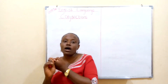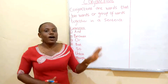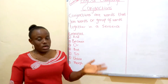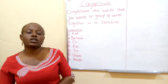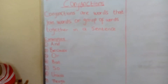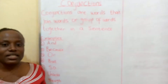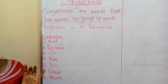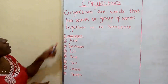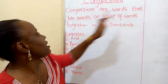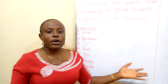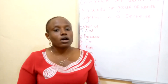I'm going to put it down on the board. On the board I have written out the meaning of conjunctions. Conjunctions are words that join words, a group of words together in a sentence. Now we are going to be going ahead to look at examples of conjunctions.